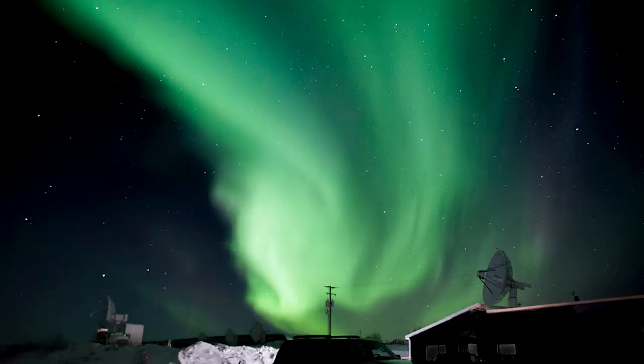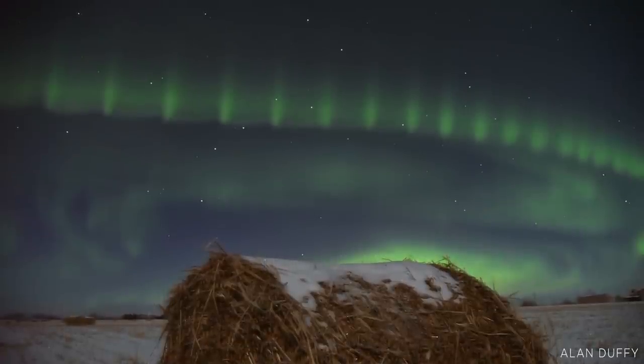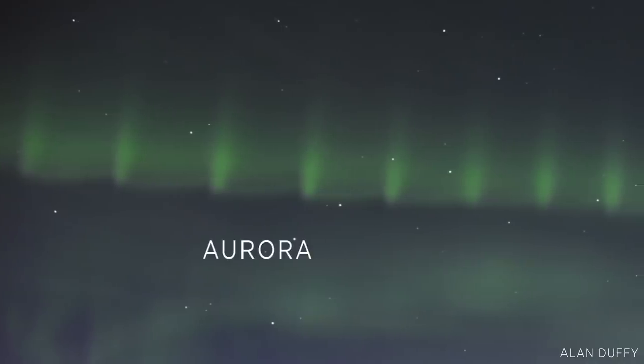Right before auroras dance in the sky, there's often an appearance of a mysterious shape. It drapes across the sky like a glowing pearl necklace. Scientists call them auroral beads.